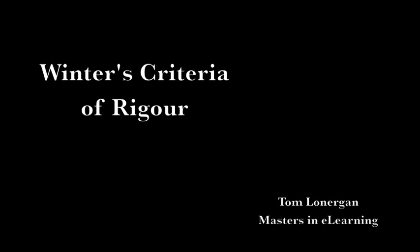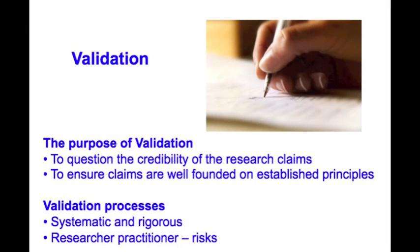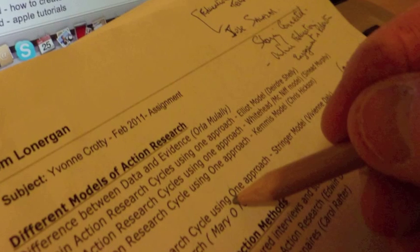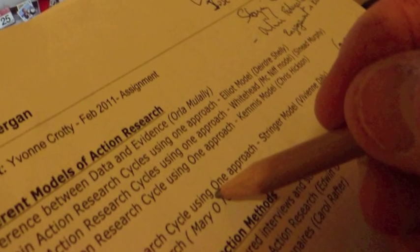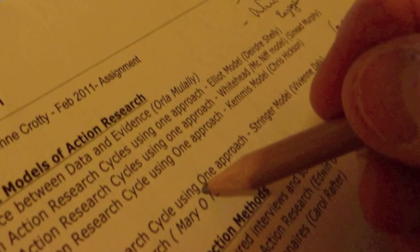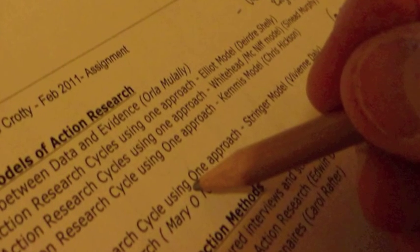The title of this vodcast is Winter's Criteria of Rigor, and it is presented in the context of validation of research, and specifically with respect to validation in action research contexts. The validation process is necessary to ensure that the claims made are well-founded on established principles, and that the process used to critique the claims is systematic and rigorous. In the context of action research, where the researcher is immersed as a co-practitioner, there is a heightened need to ensure that the research is carried out rigorously.